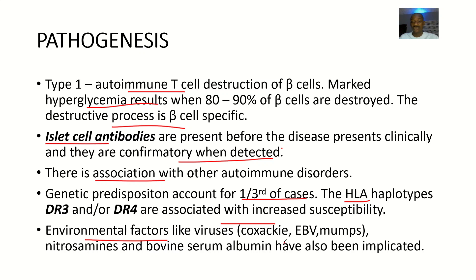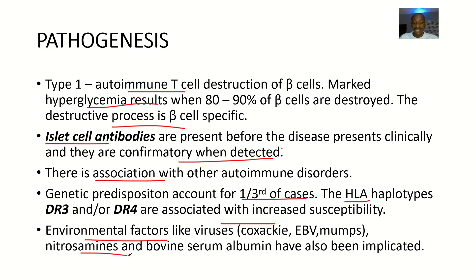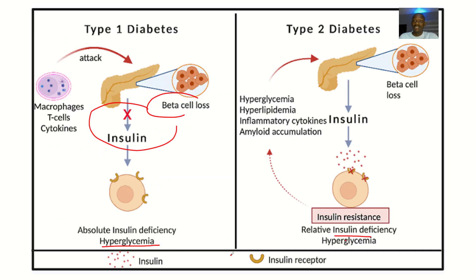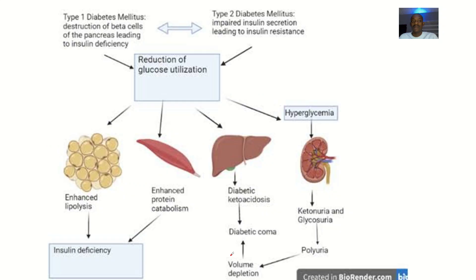Other environmental factors such as viruses — including Coxsackie virus, Epstein-Barr virus, and mumps — as well as nitrosamines and bovine serum albumin, have also been implicated in the destruction of the beta cells in the pancreas.